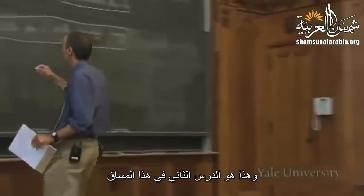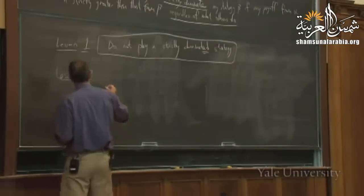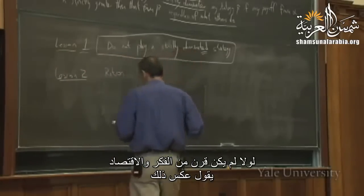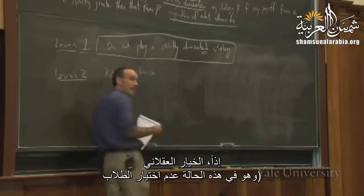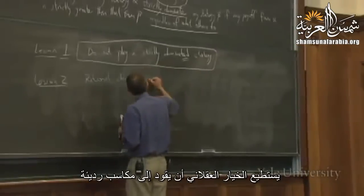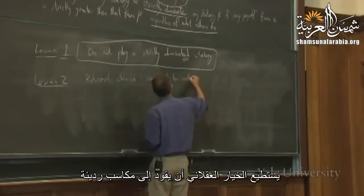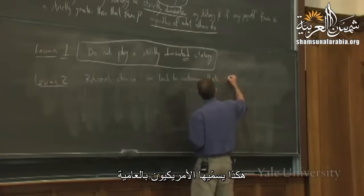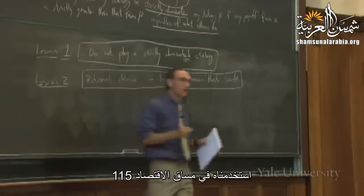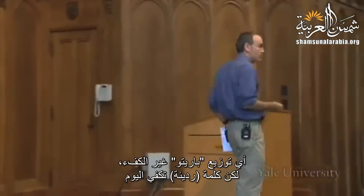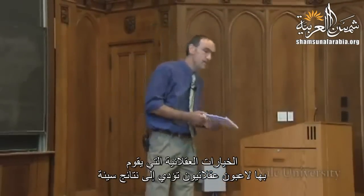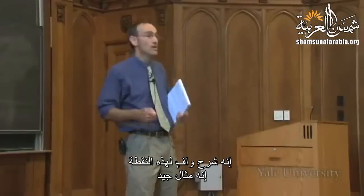And that's probably the second lesson of the class — a lesson that wouldn't be worth stating if not for a century of economic thought that said the opposite. Lesson two: rational choice — people not choosing a dominated strategy, people choosing a dominant strategy — can lead to outcomes that suck, or in more technical terms, outcomes that are Pareto inefficient. Rational choice by rational players can lead to bad outcomes.